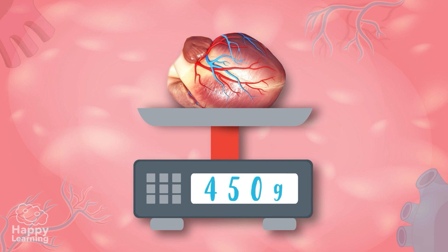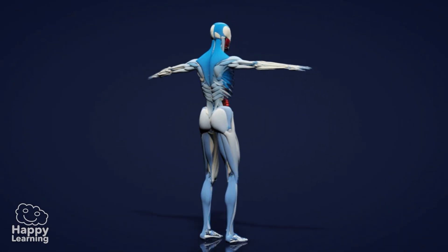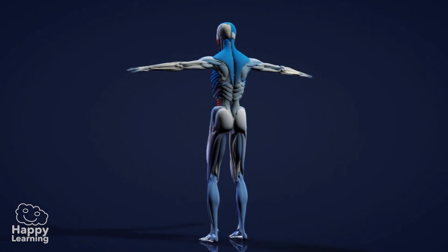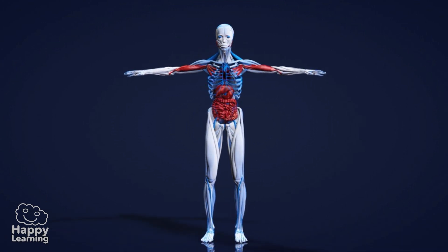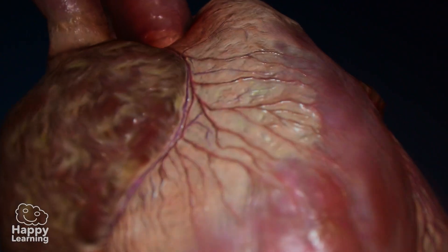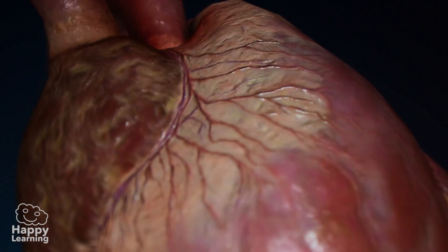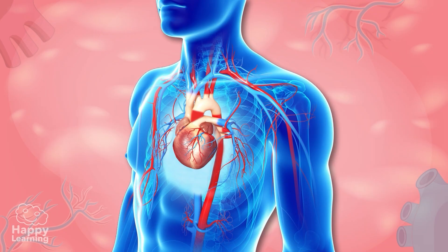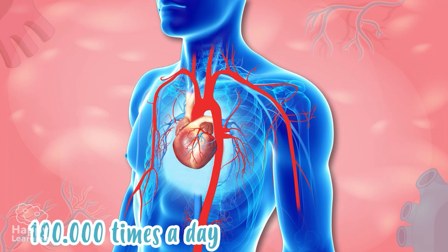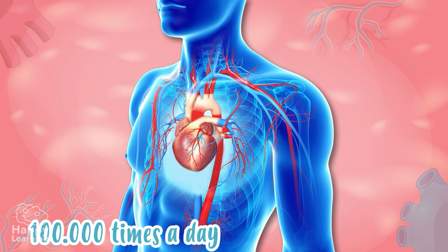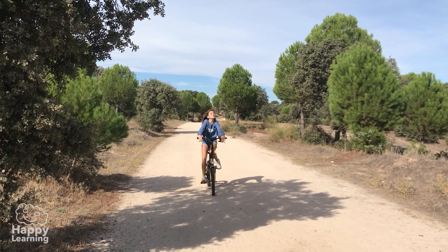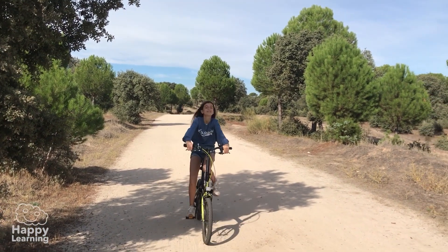Fun fact — do you know approximately how much a human heart weighs? It's 450 grams, almost half a kilo! The heart truly is the engine of our circulatory system and is an incredibly strong muscle.